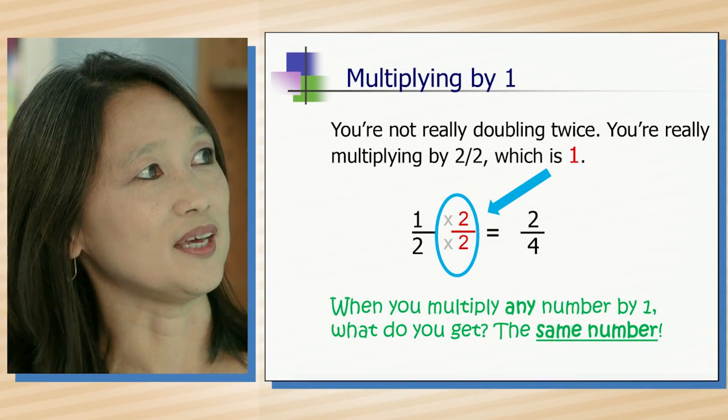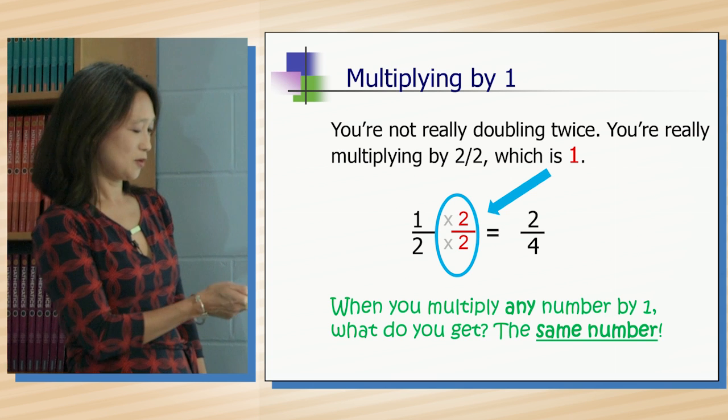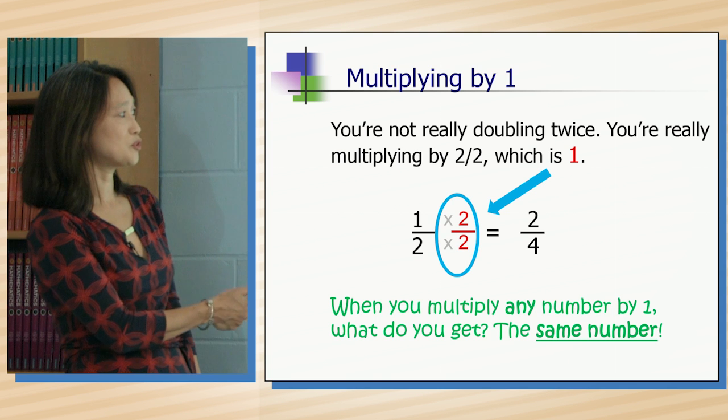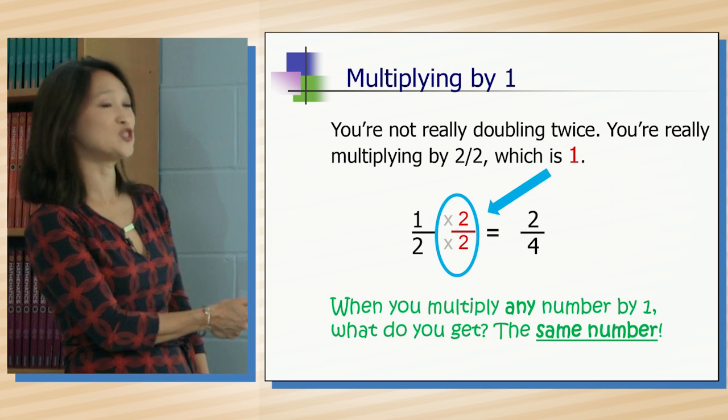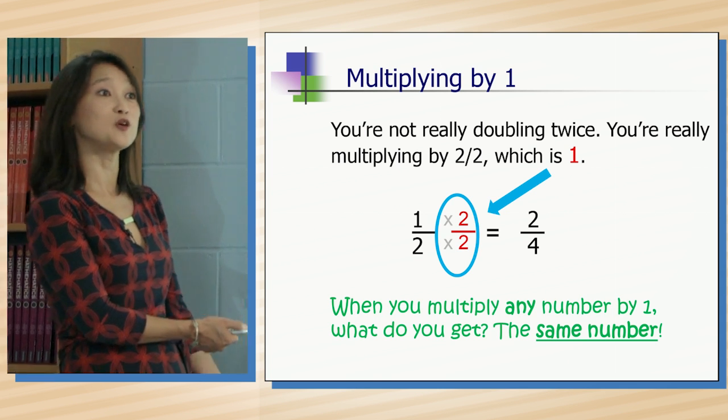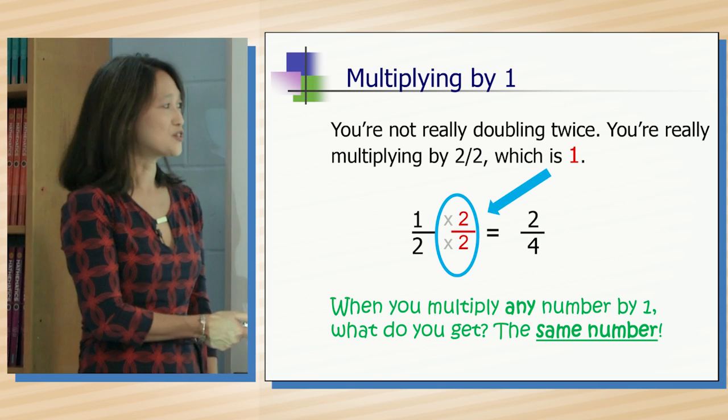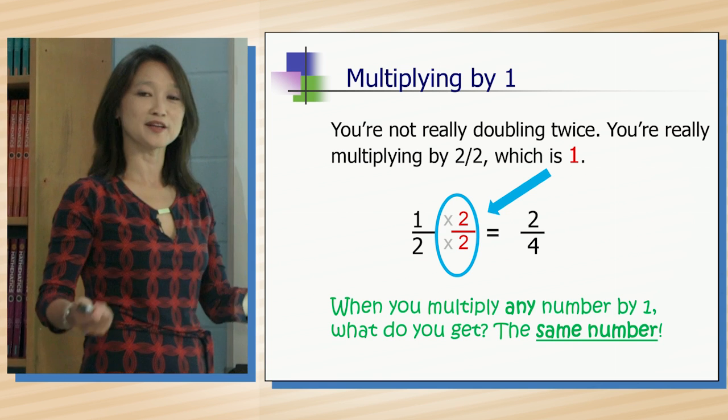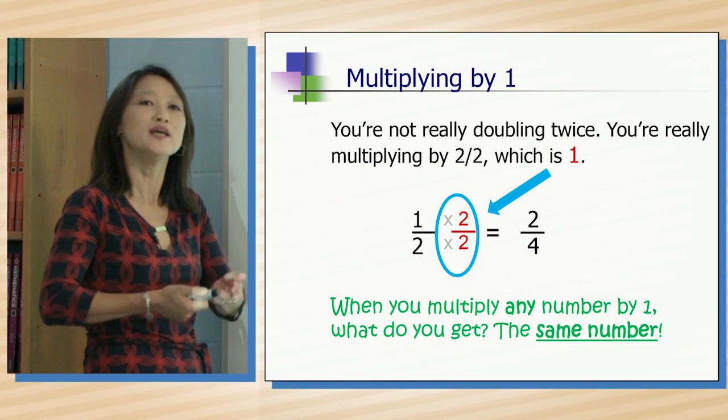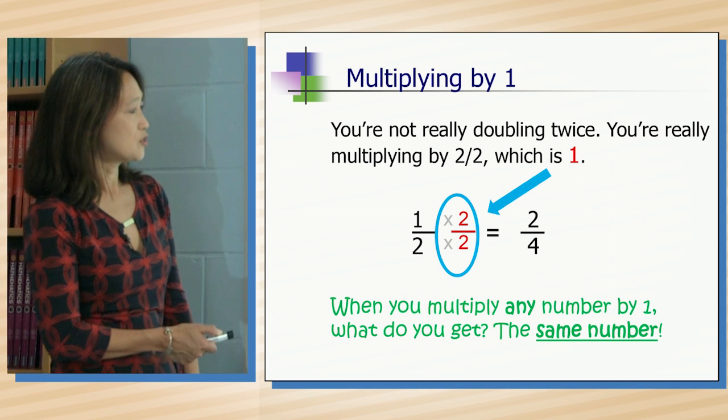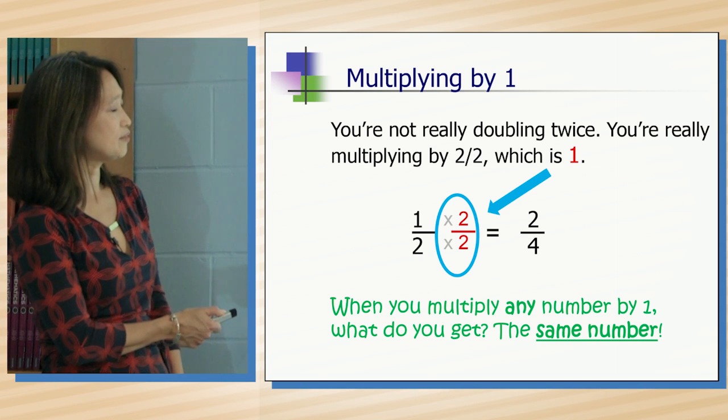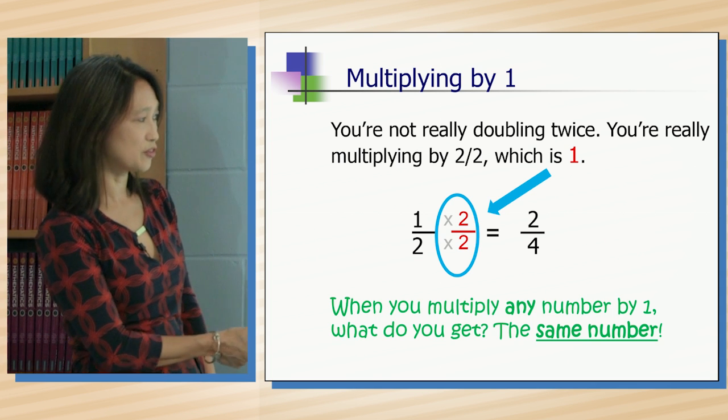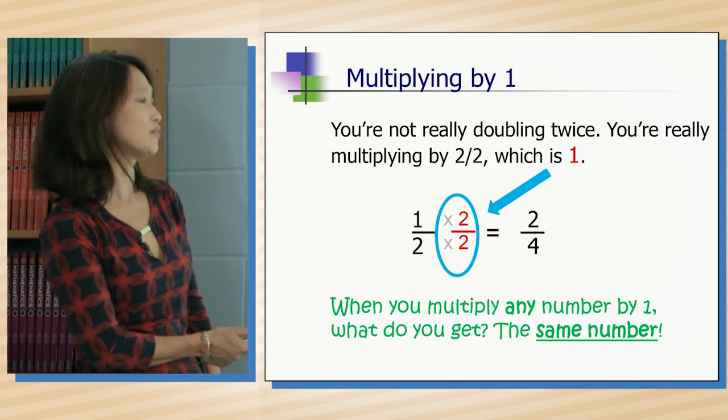You're not really doubling it twice. What's really happening is you're multiplying this entire fraction by two halves, and two halves equals one whole. What happens when you multiply any number by one? Does the number get any bigger? Nope. Multiply a number by one, it always stays the same. So you're taking one half and multiplying by two halves or one whole, and you get a different fraction that's equivalent.